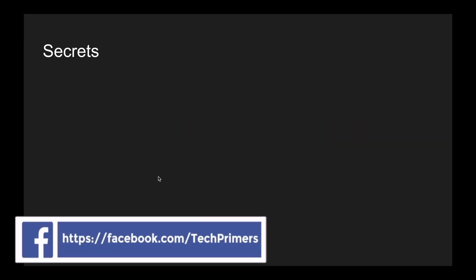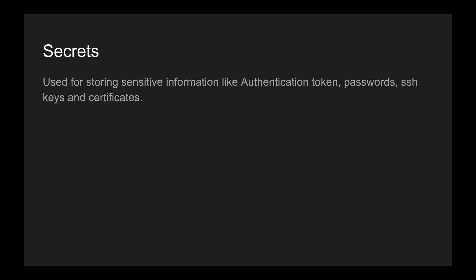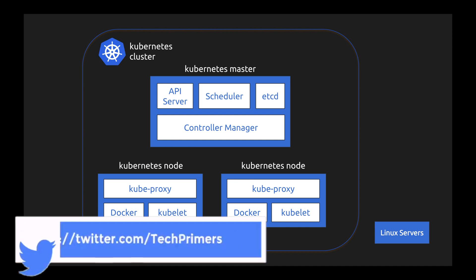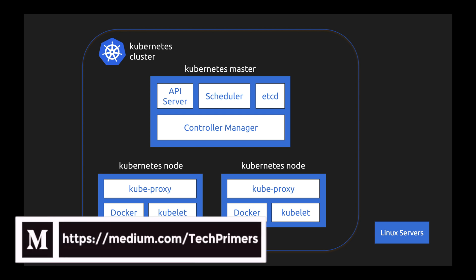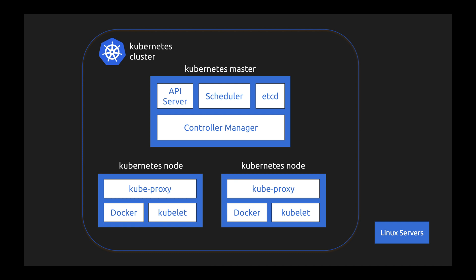Secrets in Kubernetes are useful for storing information such as authentication tokens, passwords, certificate files, and SSH keys. These secrets are stored inside etcd, the data store of Kubernetes. All secrets created inside Kubernetes go into etcd, and by default Kubernetes does base64 encoding. If you're using secrets in production, you need to be aware that anybody can decrypt that information using base64 decoding standards.